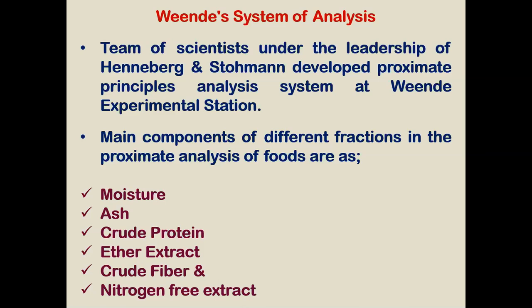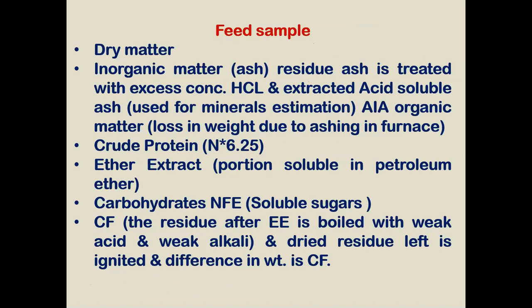Proximate analysis contains six components: first is moisture, that is dry matter content of feed; then ash; crude protein; ether extract; crude fiber; and nitrogen-free extract. These six principles come under the Proximate analysis or Proximate principle combination.